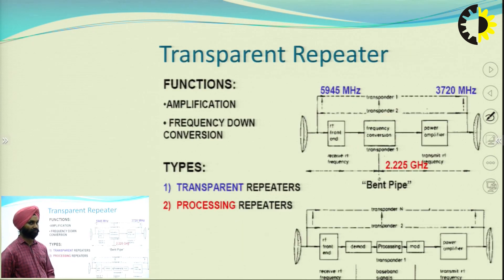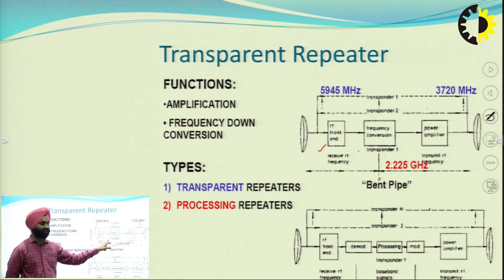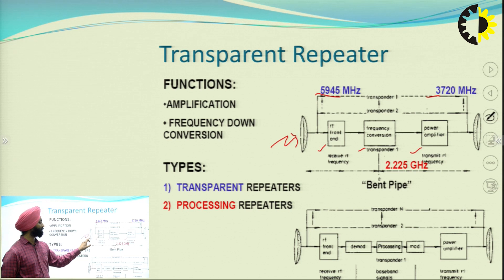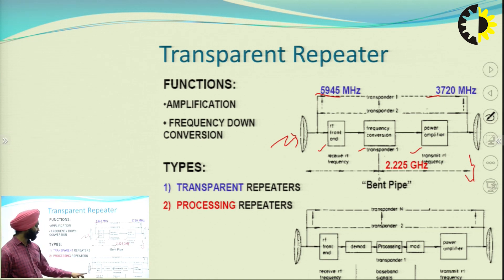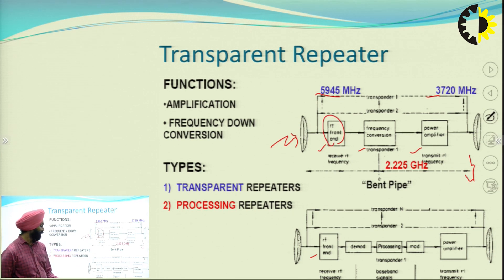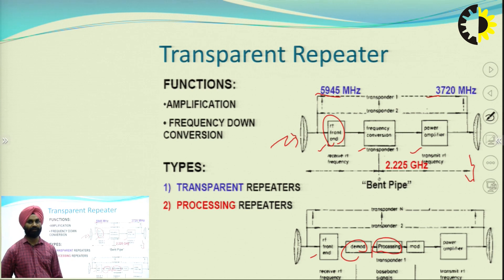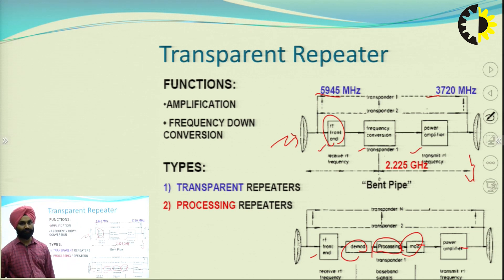For the transparent repeater, there is a front end, frequency translation, and power amplifier — the same signal is transmitted back on the downlink (e.g., six to four gigahertz). For the processing transponder, there is a front end, demodulation, then processing such as encryption or signal regeneration, then modulation, and after the power amplifier it is transmitted back to the station.